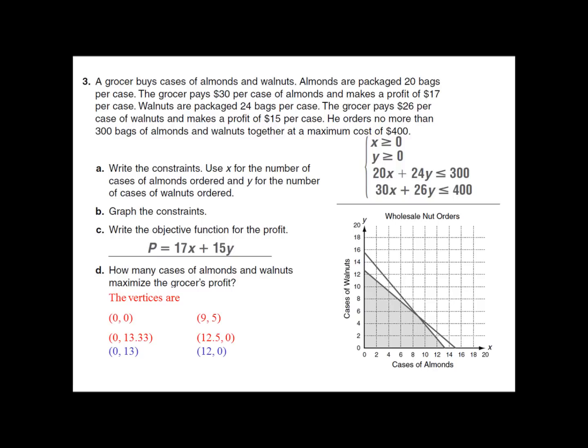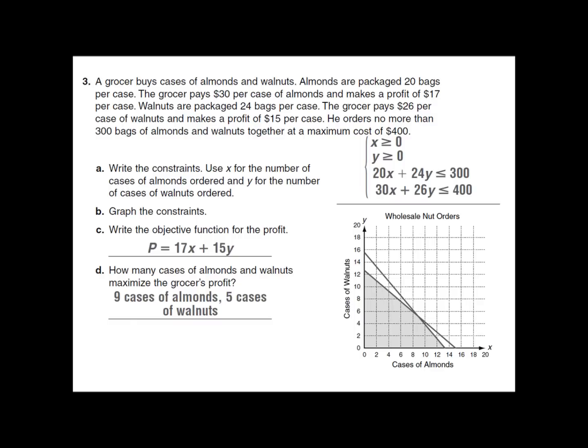I want to make a substitution here — we can't order fractions of cases, so I'll use (0, 13) instead of (0, 13.33), and (12, 0) instead of (12.5, 0). I just dropped the decimals rather than rounding. Our profit at (0, 0) is no surprise — zero. Our profit at (0, 13) is $195. Our profit at (9, 5) is $228, and our profit with 12 cases of almonds and zero walnuts is $204. So we're going to order 9 cases of almonds and 5 cases of walnuts to maximize the grocer's profit.